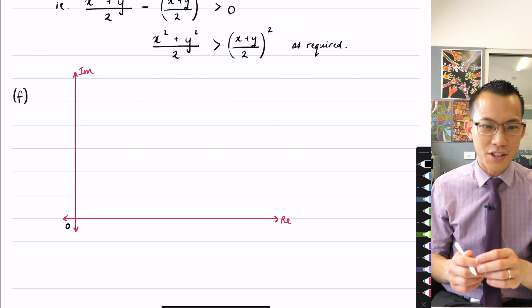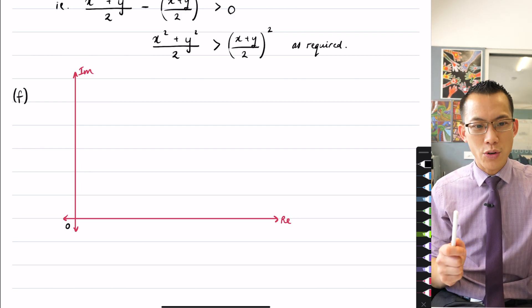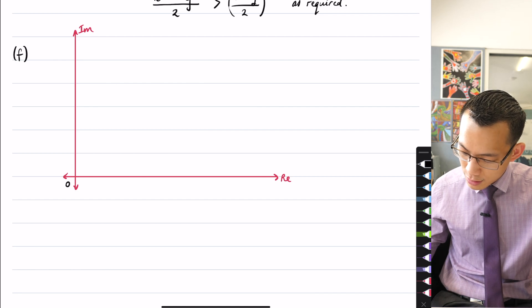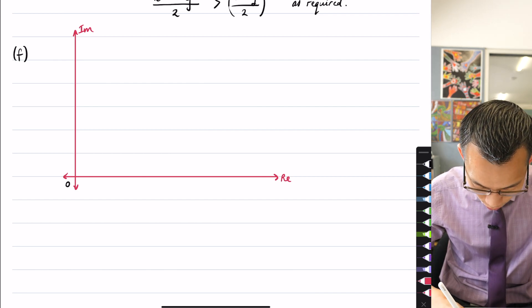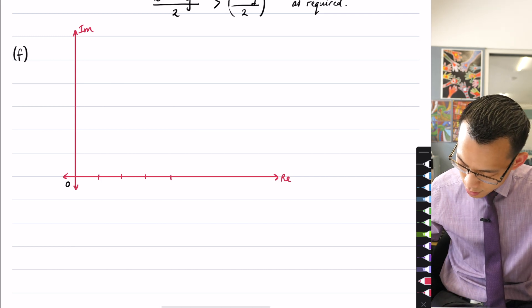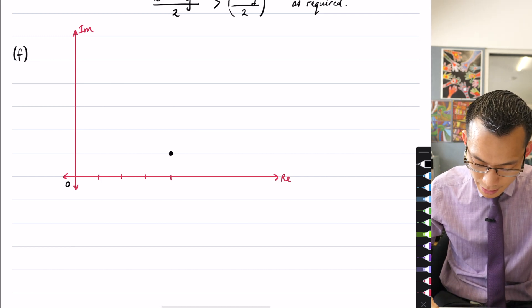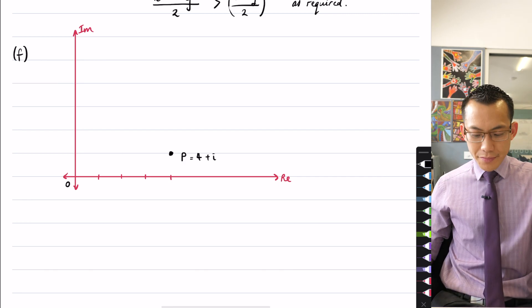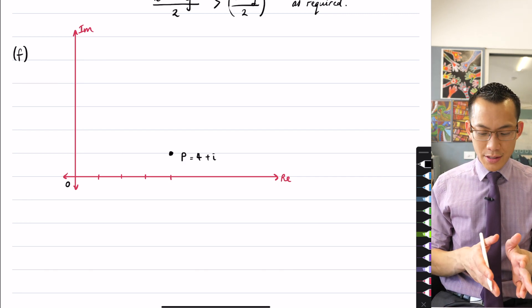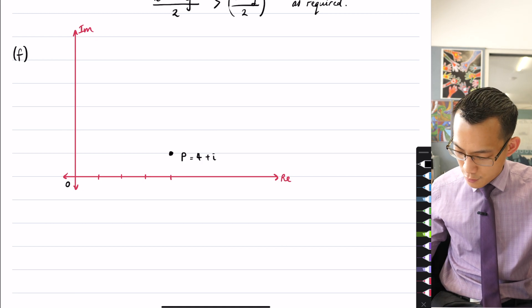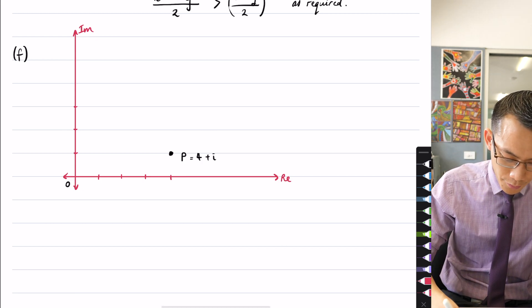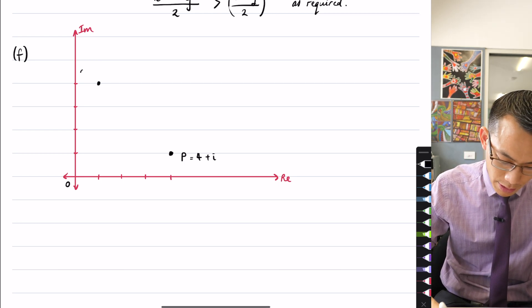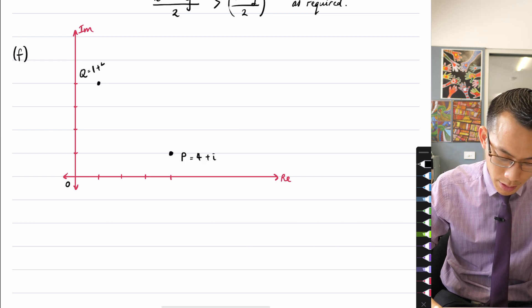Now the particular points that have been handed to us are P, which is at 4 plus i. So I'm going to go over, if we say, just looking at the scale here, I'm going to mark in 1, 2, 3, 4. So that's going to place point P about there. This is 4 plus i. There's point P. Point Q is 1 plus 4i. So therefore, if I do the same kind of 1, 2, 3, 4, but use those lines, that's going to be lining me up about there. So I'm going to call that Q, which is equal to 1 plus 4i.